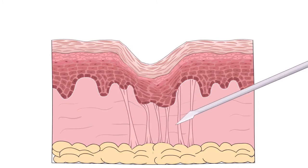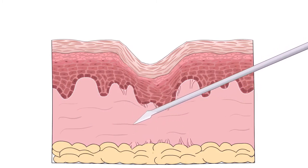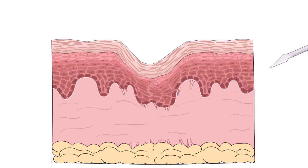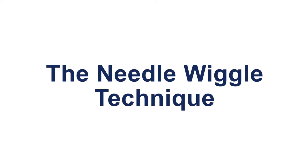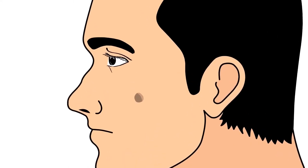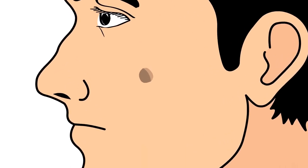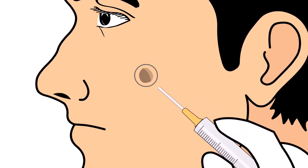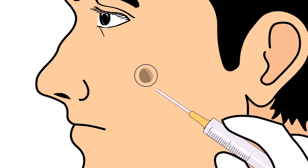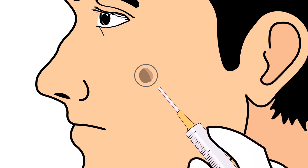The Rewind technique uses local anesthesia and sterile technique, and the scar tissue underneath is released. The needle wiggle technique is a form of subcision usually done by non-surgeons, and it is limited in its usefulness to only very small areas of acne scarring. A needle is passed into the exposed skin near the scar and is wiggled back and forth in an attempt to break some of the scar tissue beneath the acne scar with the side of the needle.